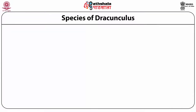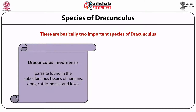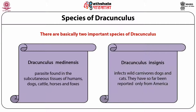There are basically two important species of Dracunculus: Dracunculus medinensis and Dracunculus insignis. Dracunculus medinensis is a parasite found in the subcutaneous tissues of humans, dogs, cattle, horses and foxes. Whereas Dracunculus insignis is found in wild carnivores, dogs and cats, and has so far been reported only from America.